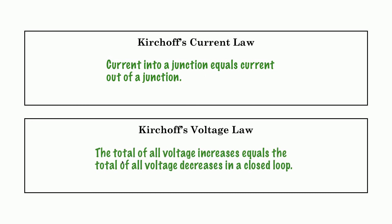Kirchhoff's Voltage Law says that the total of all voltage increases in a circuit has to equal the total of all voltage decreases. So if there's 12 volts available to be used in a circuit because of a 12-volt battery, that voltage will all be used by whatever happens to be in that closed loop. There's no saving voltage for a rainy day — it's all used in the circuit.